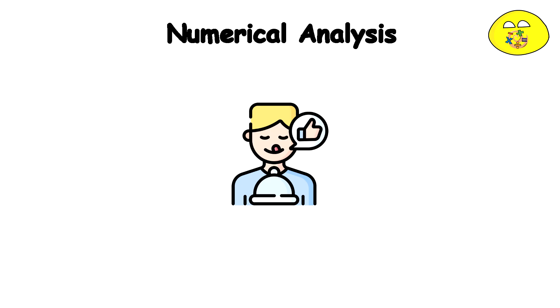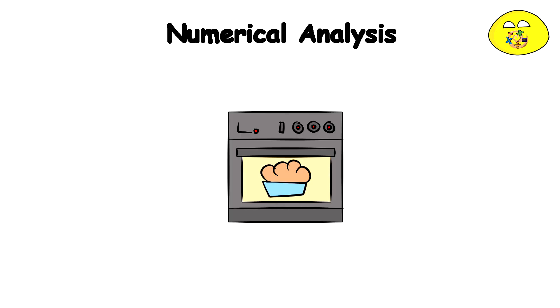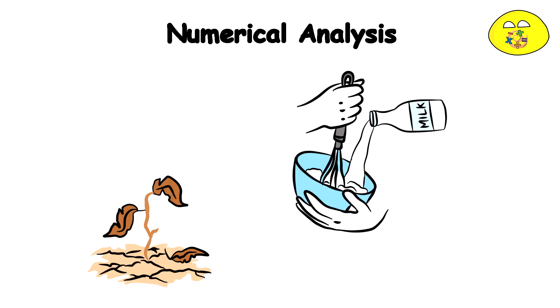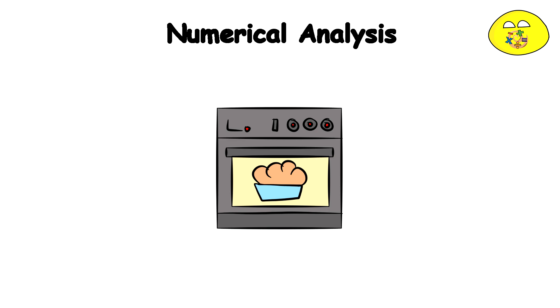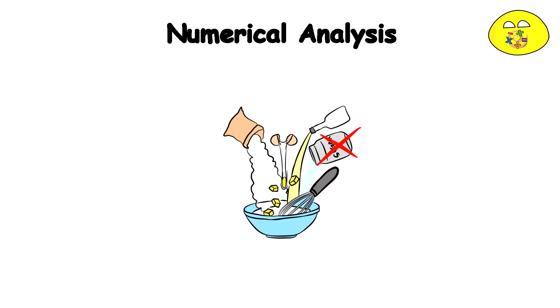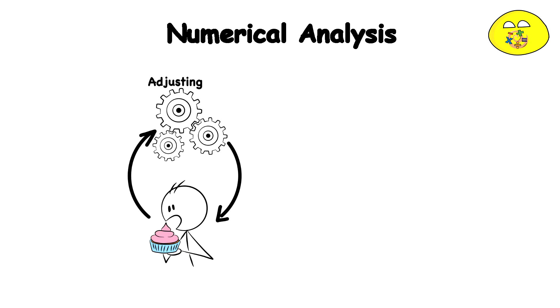Taste and adjust. After mixing your ingredients and baking a small sample, you taste it. It's not perfect, maybe too dry, so you decide to add more milk. You bake another small sample with your new mix. This time it's better, but maybe now it's too sweet. You adjust again, maybe less sugar this time. You repeat this process of adjusting and tasting until you're happy with the result.